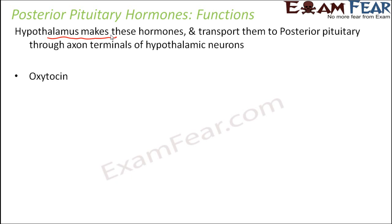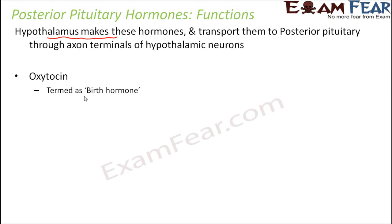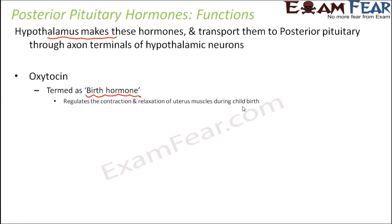There are two such hormones: oxytocin and vasopressin. Oxytocin is also known as the birth hormone. Why birth hormone? Because it acts primarily on the female body, where it regulates the contraction and relaxation of uterus muscles during childbirth.